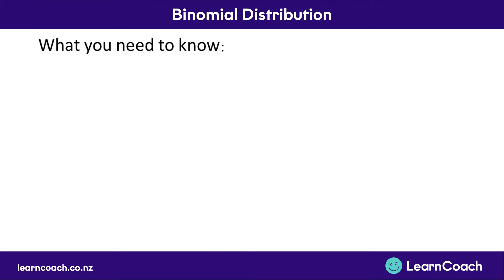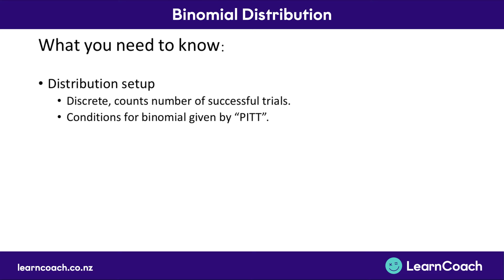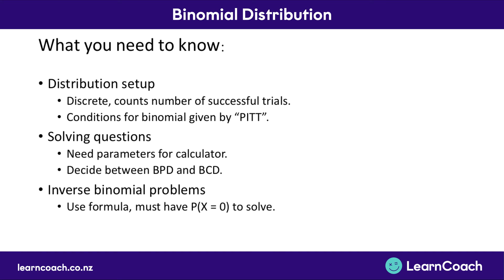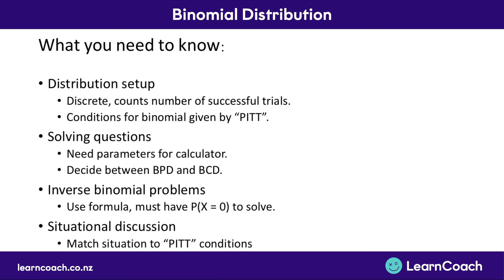Now we've covered all the learning objectives. We know that binomial distribution is discrete and counts the number of successful trials. The conditions are given by the acronym PITT. For solving questions, we need the parameters x, numtrial, and p, and we choose between BPD and BCD. For inverse binomial problems, we use the simplified formula when we have the probability of x being zero. For the situational discussion, we match the situation to the PITT conditions. For any binomial exam question, you should be able to describe the distribution, solve using your calculator or the formula, and justify why it fits the situation. In the next video, we'll be moving on to the Poisson distribution.